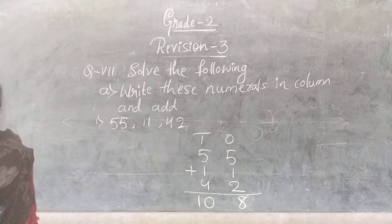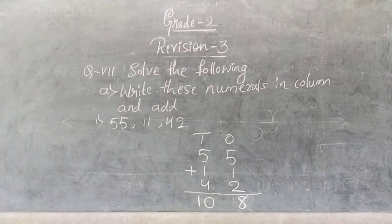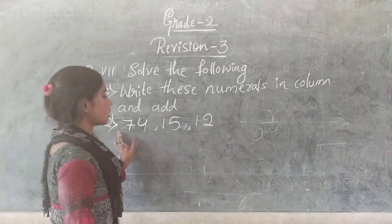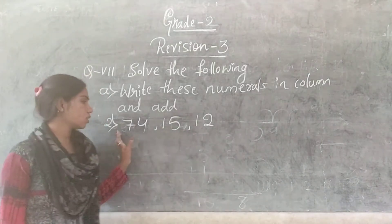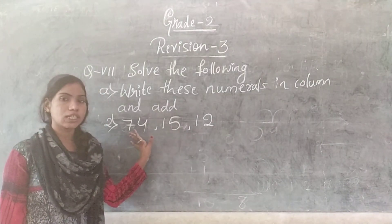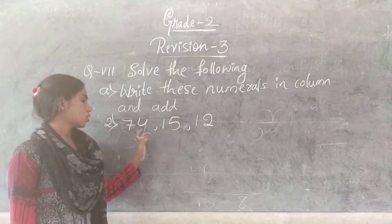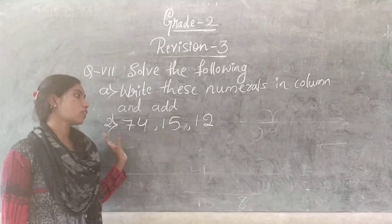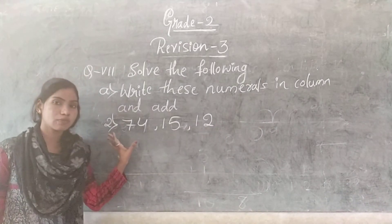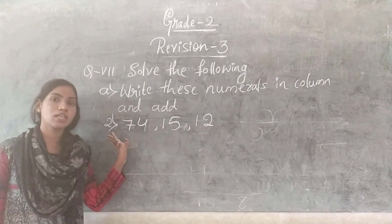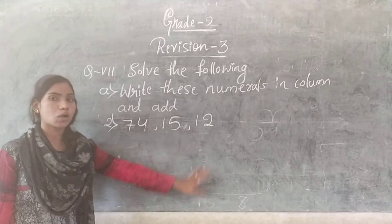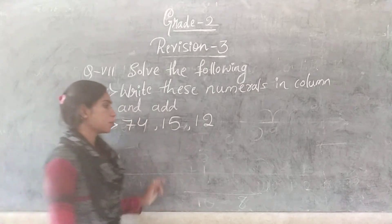Now come to the second one. The second one also has 3 numbers: 74, 15, and 12. First write the given numbers in their respective columns, then add all the numbers.